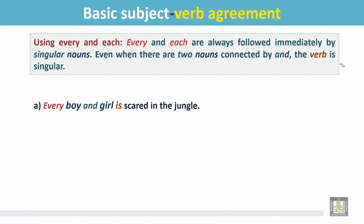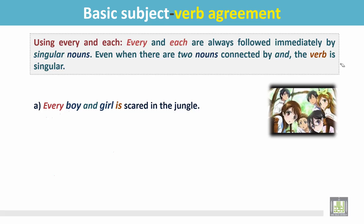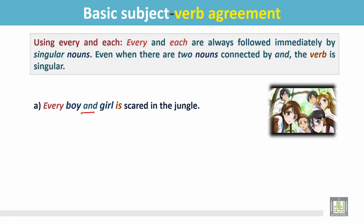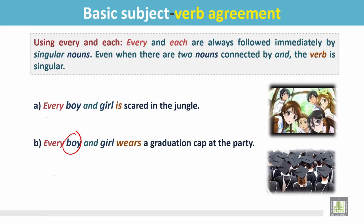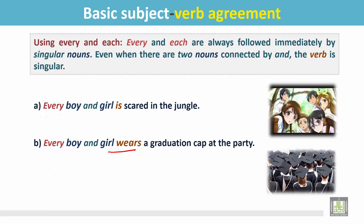For example: 'Every boy and girl is scared in the jungle.' In the picture, every boy and girl is scared. In the sentence, 'every' is followed by the singular nouns boy and girl, and they are connected by 'and'. The verb should be singular. These two singular nouns, boy and girl, are connected by 'and', and 'every' is followed by them. Use the present simple form of the verb and add 's' as the subject is singular.